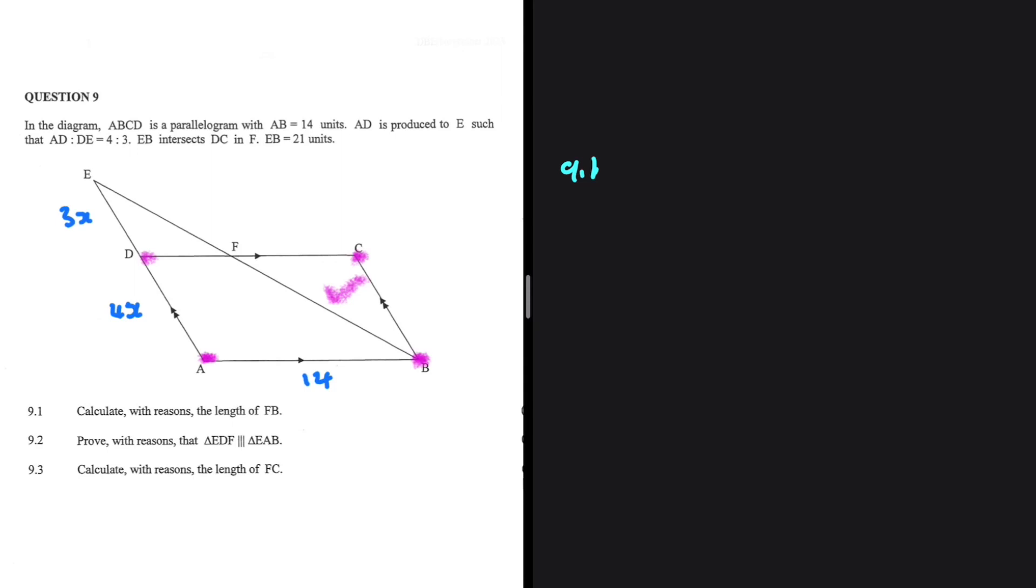So EB divided by FB should be equals to EA divided by DA. Why am I saying that? DF is parallel AB, so the two sides are divided proportionally. So what is EB? EB is 21, like we have in the information.